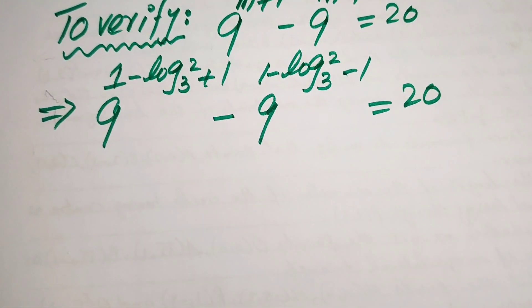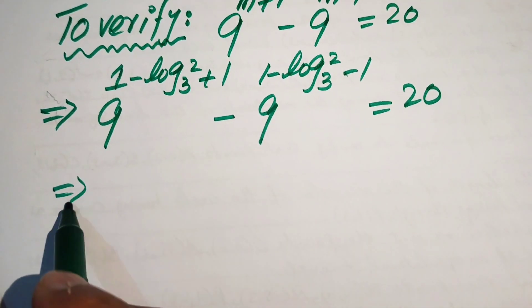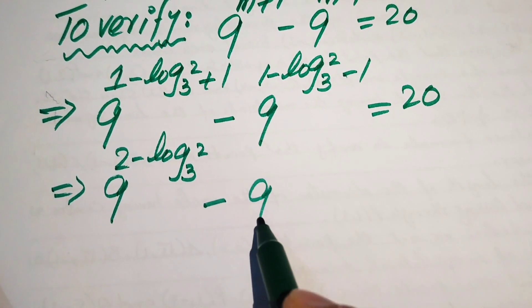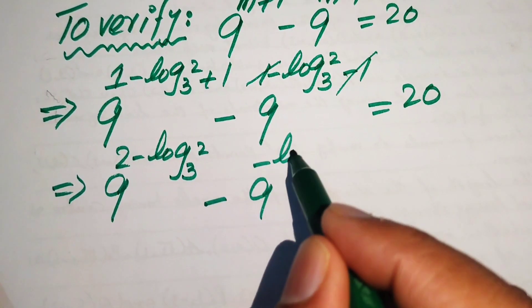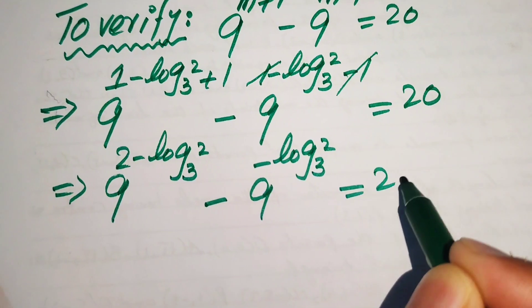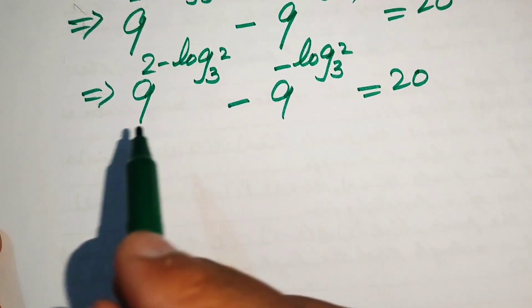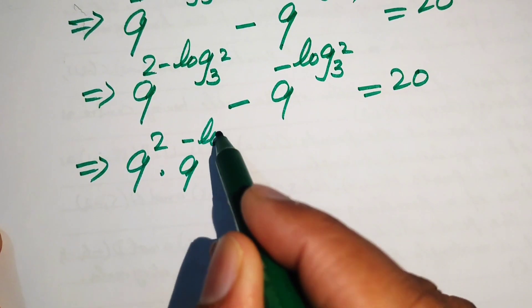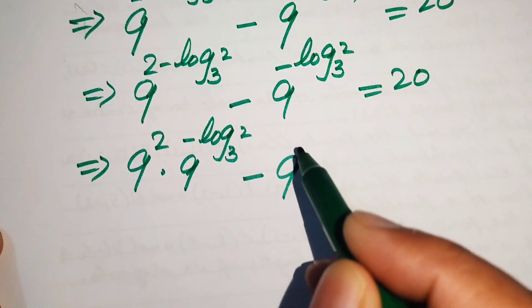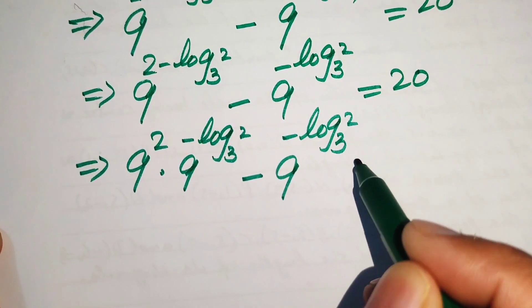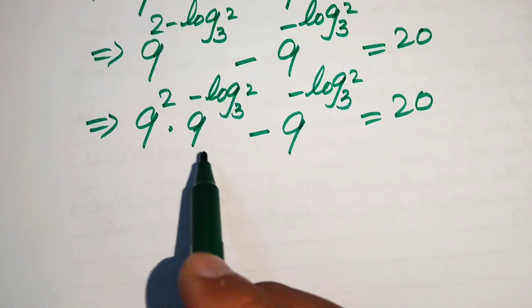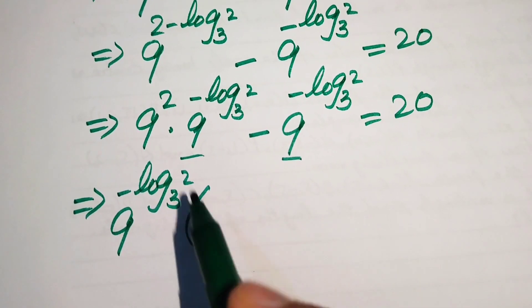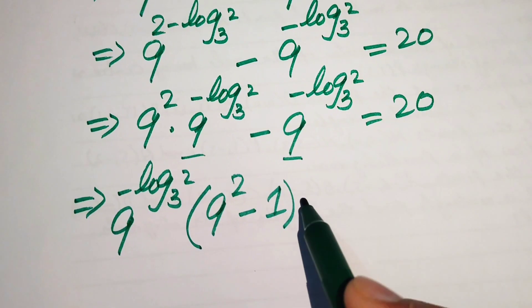Simplifying the exponents: 1 plus 1 becomes 2 minus log₃2, and negative 1 and positive 1 cancel leaving minus log₃2. So we have 9 to the power of (2 minus log₃2) minus 9 to the power of (minus log₃2) equals 20. Breaking apart the first term gives 9 squared into 9 to the power of minus log₃2, minus 9 to the power of minus log₃2, with remaining factor 9 squared minus 1 equals 20.